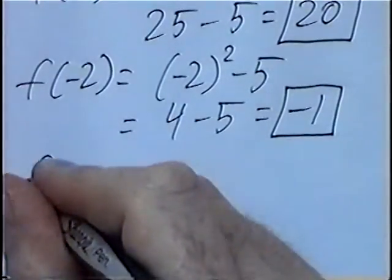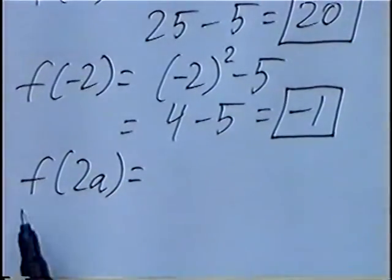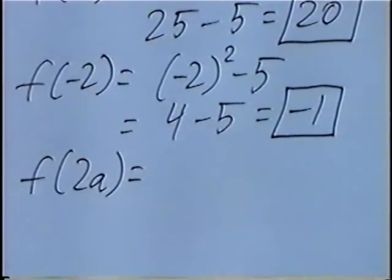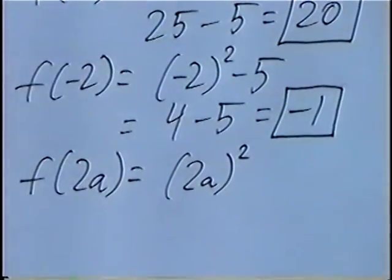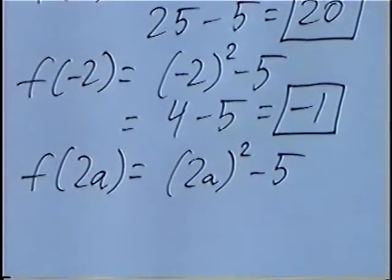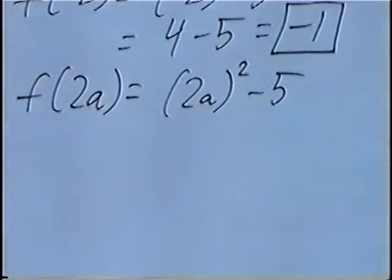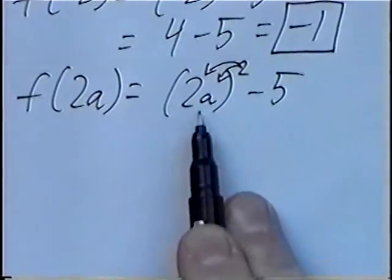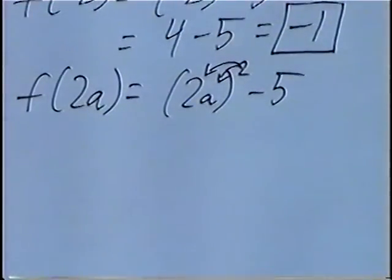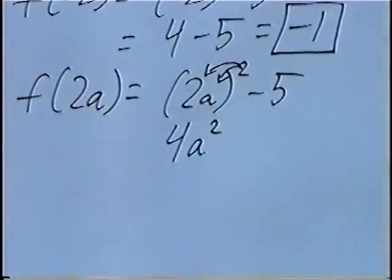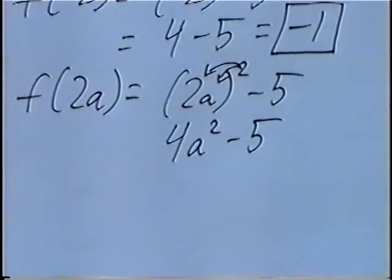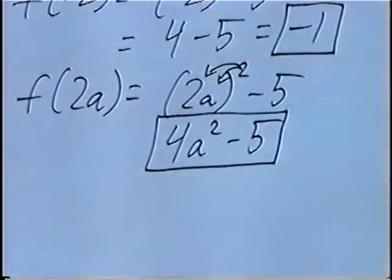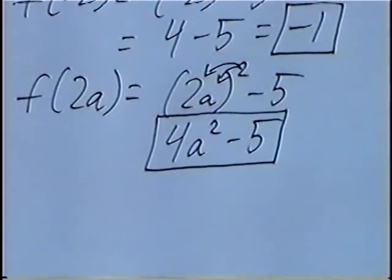The last question is f(2a) — the function of 2a. We take 2a and plug it in for x: instead of x squared, we have (2a) to the second power, then minus 5. The squared gets distributed to each number and variable inside — 2 squared is 4 and a squared is a squared. Minus 5 comes down. There are no like terms to simplify, so the final answer is f(2a) = 4a squared minus 5.